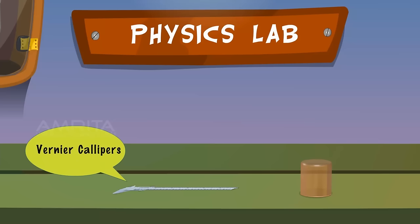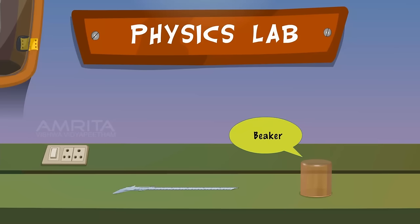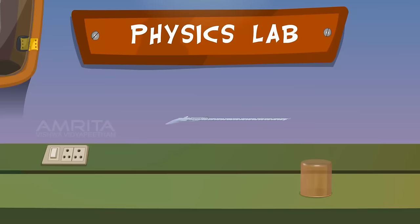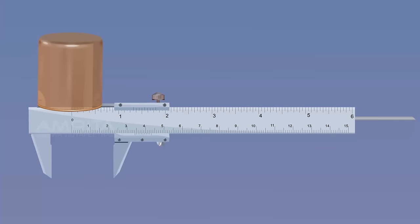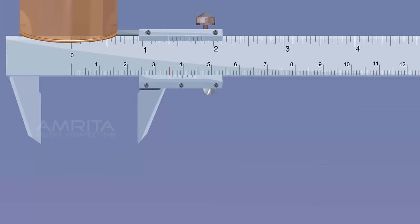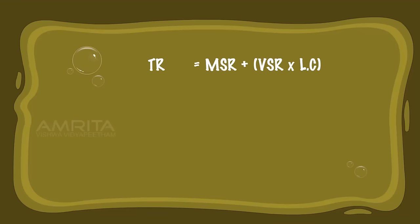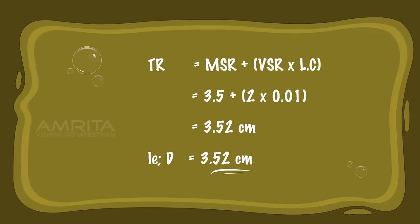Beaker. Materials required: Vernier Calipers and beaker. Take the Vernier Calipers and the beaker. Place the beaker upside down over the internal measuring jaws and fix it tight. Note down the main scale reading and vernier scale reading. Calculation: TR = MSR + (VSR × least count) = 3.5 + (2 × 0.01) = 3.52 cm. So D = 3.52 cm.